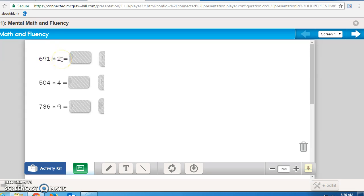691 times 2. Well, 2 times 1 is 2, so I know my ones place will be a 2. 2 times 9 is 18. I'll carry the 1, and 2 times 6 is 12 plus 1 is 13. So 691 times 2 is 1,382.